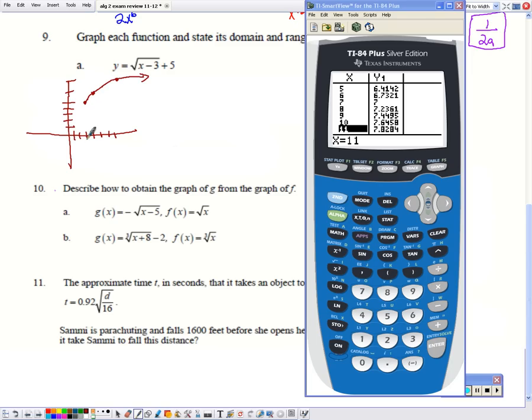Now I can see that my graph starts at 3 and goes to the right. So my domain is going to be all x values greater than or equal to 3. My range, I'm going to look up and down for y values. And I can see that my first y value is at 5, and it's everything greater than or equal to 5 because it's 5 and higher, not 5 and lower.